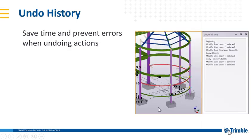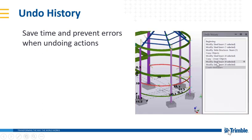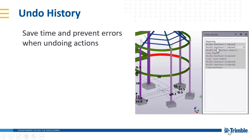Another really nice productivity tool that you're going to like in 2018 is the new Undo History. This is all about helping you save time and prevent errors when you're undoing actions. As you can see here, as you're modeling on, you can see the Undo History build up. All you have to do to go back in time is click on a row, and that'll take you back to where you were.